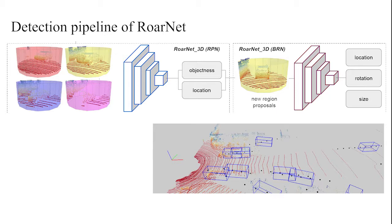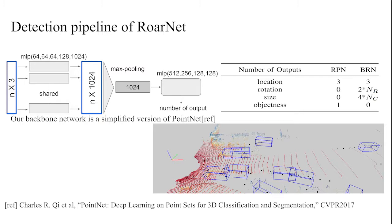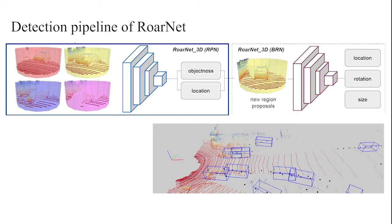RoarNet 3D consists of two networks called RPN, region proposal network, and BRN, box regression network. While building RoarNet 3D as a two-stage detector, the backbone network is inspired by PointNet. The RPN and BRN have the same structure, except for the number of outputs at the last layer.